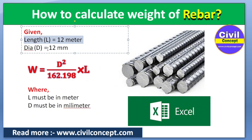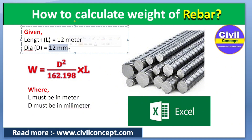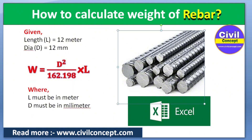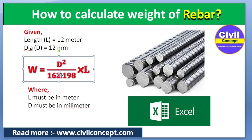The given data: length of rebar is 12 meters and diameter of the rebar is 12 mm. The length and diameter may vary according to your requirement — 8 mm, 10 mm, 12 mm, 16 mm, 20 mm, and so on. The formula is: W equals D squared divided by 162.198, which you can also write as 162.2. This is a constant value you cannot change.